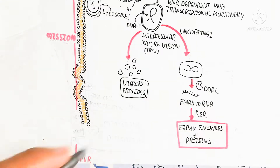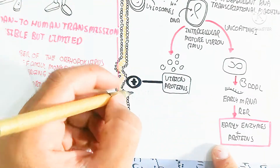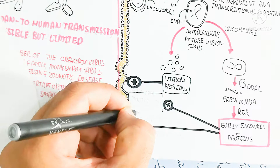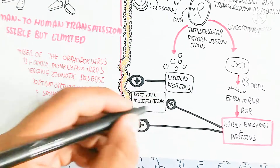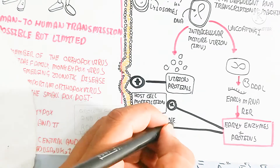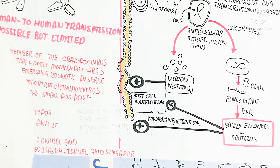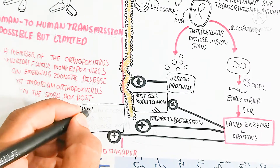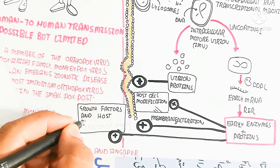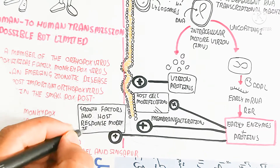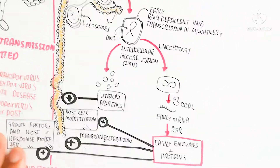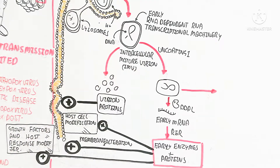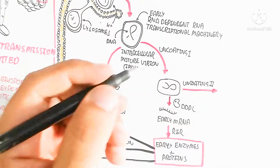Early enzymes and proteins function to damage the host cell. Virion proteins are produced, which alter the shape of the host cell, causing host cell plasma membrane modification and membrane alteration. This membrane alteration, along with growth factors and host response modifiers, leads to increased water efflux, resulting in blister formation in the skin. The blisters can then rupture and damage the tissue.